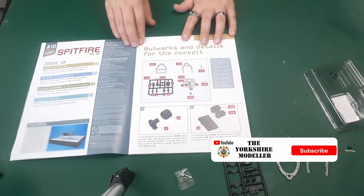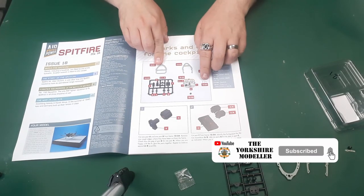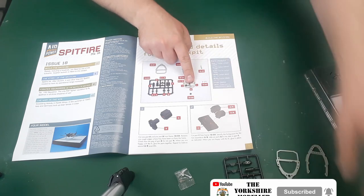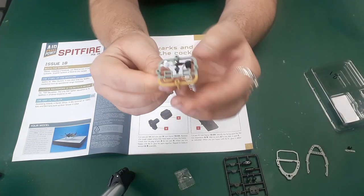In Issue 18, we're starting with the bulwarks and details for the cockpit. So we've got the bulwarks there, a connector, some screws, this part, this sprue here. This one we don't actually use in this issue.